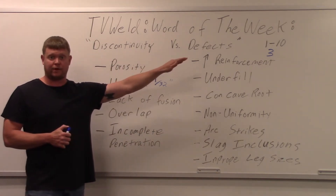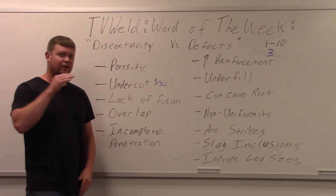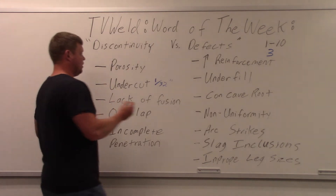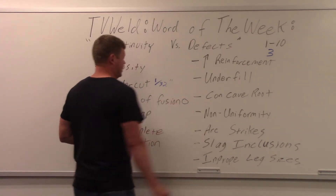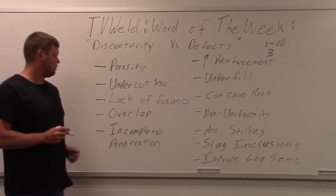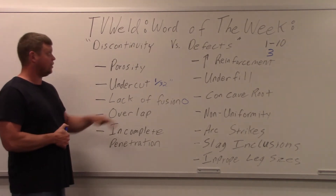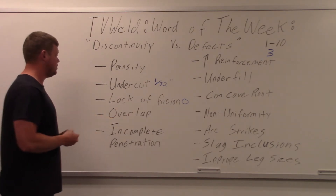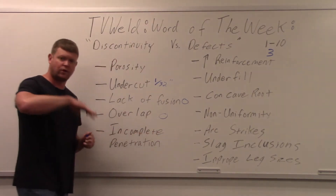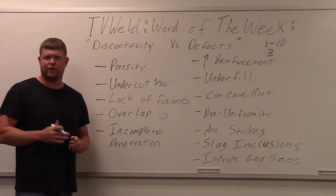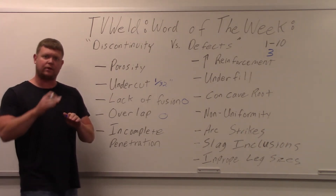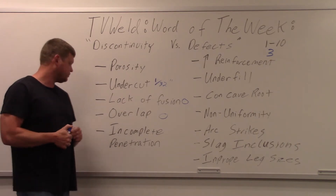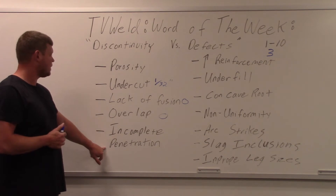Over 1/32 is a defect, under is a discontinuity — pretty simple. Lack of fusion is usually zero tolerance — if you have any lack of fusion, it's an automatic defect. That discontinuity becomes a defect immediately. Overlap is also usually zero — that's when the weld kind of rolls over, like in a fillet weld situation, rolling over and lumping up on the bottom, but it doesn't actually fuse.